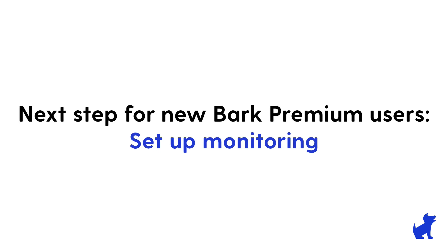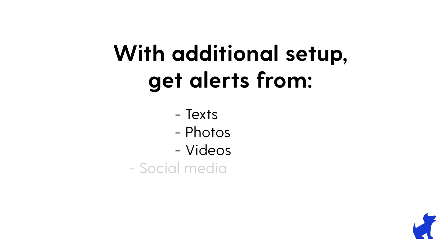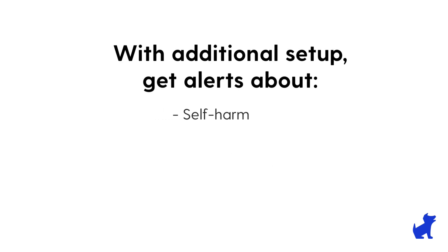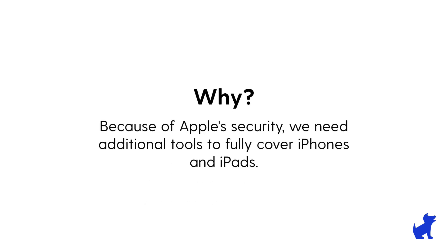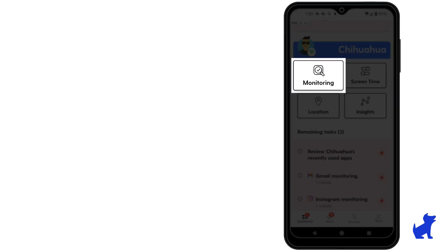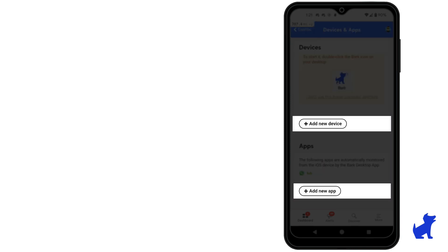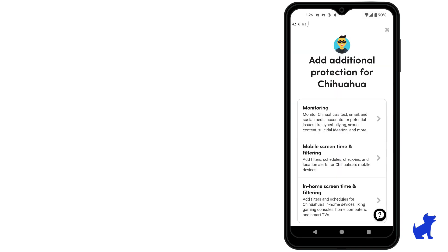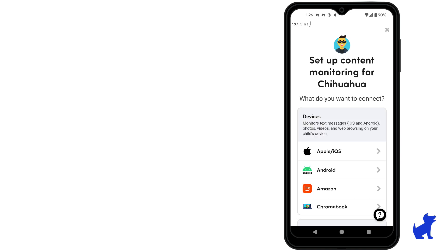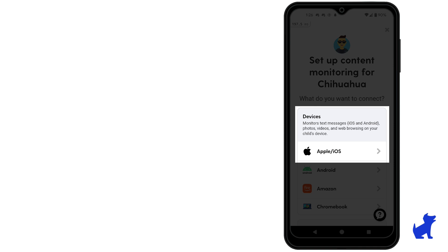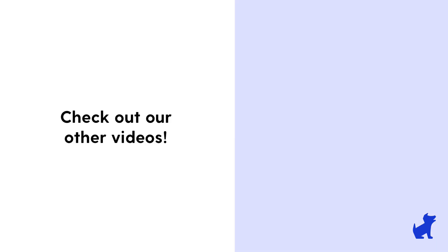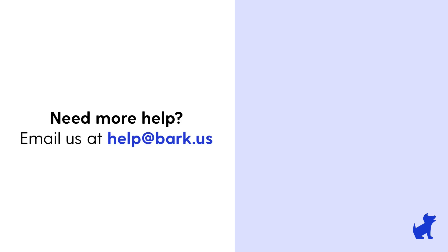If this is your first time getting your child set up with Bark, you're not done there. With Bark Premium, you need to do some additional setup to monitor your kid's texts, photos, videos, and social media for worrisome content like self-harm, bullying, violence, and that sort of thing. Because of Apple's security, we can't just do it with the Bark Kids app. The easiest way to find out what additional setup you need is to go to your Bark parent dashboard and tap on the Monitoring tile, then tap Add App or Add Device. You'll get the instructions needed to set up that particular platform. If you want to monitor iPhone texts, for example, select Apple/iOS device. Learn more in our How to Monitor iPhone videos. If you need further assistance not covered by our videos, don't hesitate to reach out to us at help@bark.us.